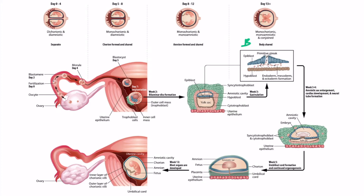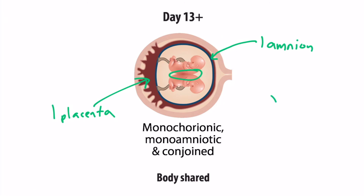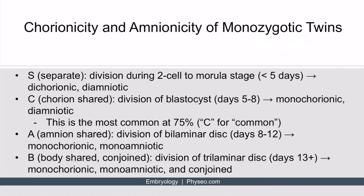The B in SCAB indicates that the body is shared, referring to conjoined twins. This conjoining occurs at day 13 and above, when the embryo undergoes gastrulation and you get the trilaminar disc — endoderm, mesoderm, and ectoderm. If division occurs during the formation of the primitive streak or just before the trilaminar disc forms, the twins will share the chorion and amnion already formed, and also share part of their body. The prevailing theory is that only part of the primitive streak splits into two embryos; the part that doesn't split becomes a body part shared by the twins. Zooming in, we can see one placenta, one amnion, and the conjoining. So these twins are monochorionic, monoamniotic, and conjoined.